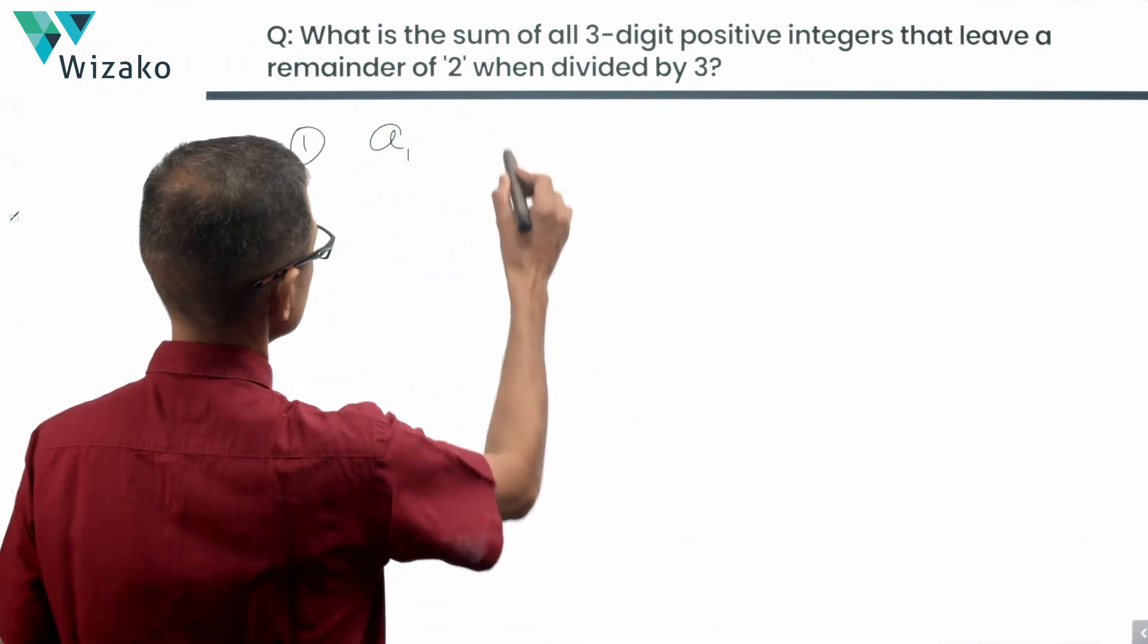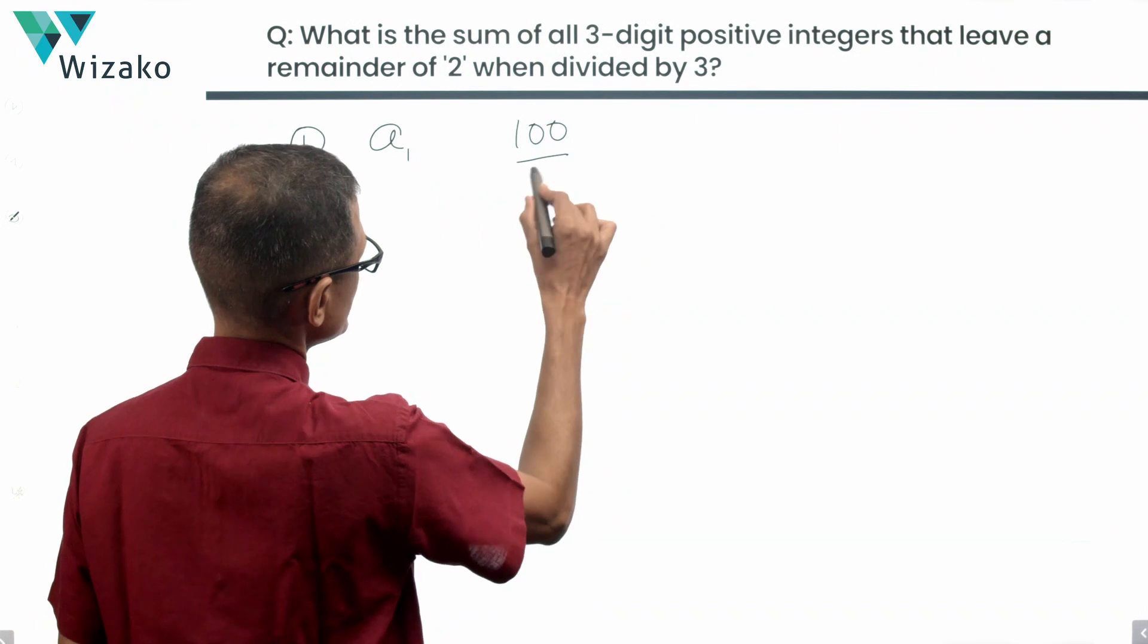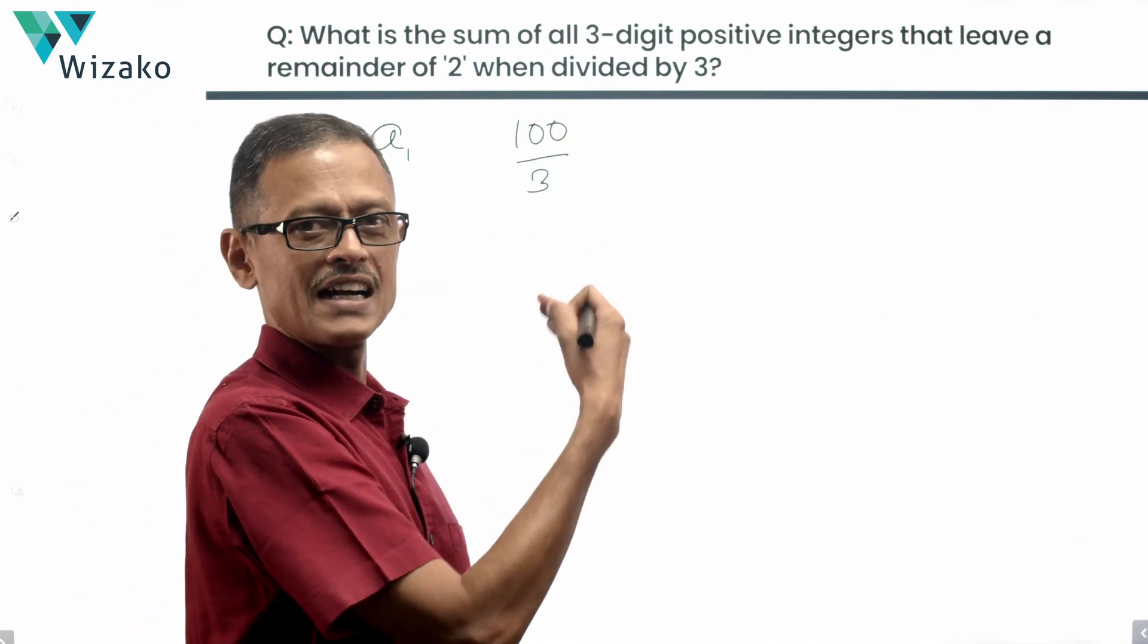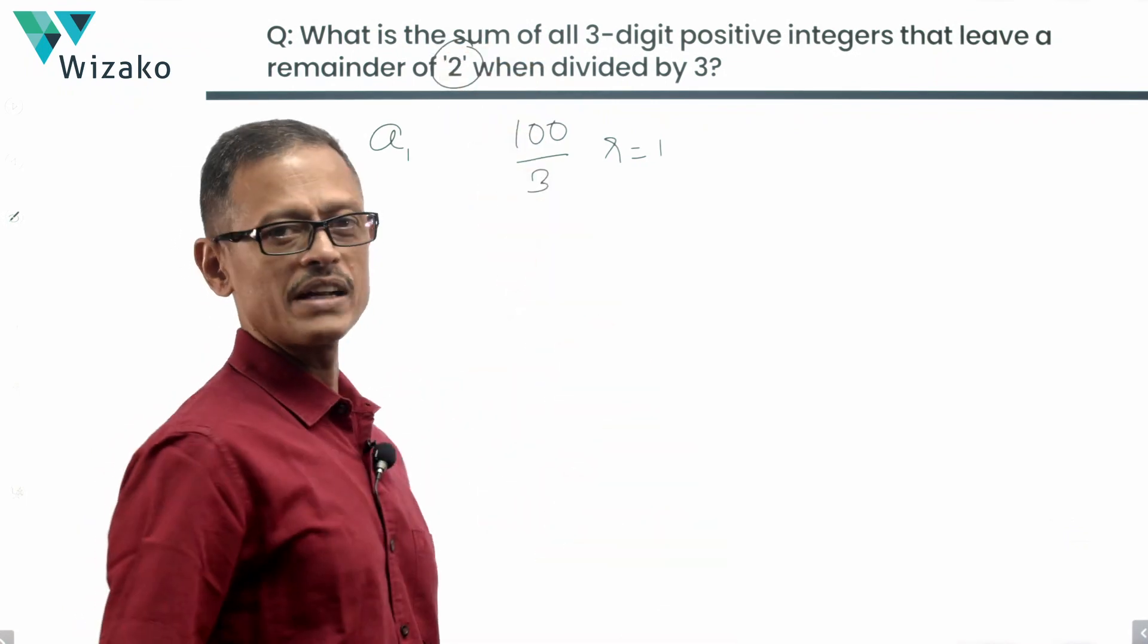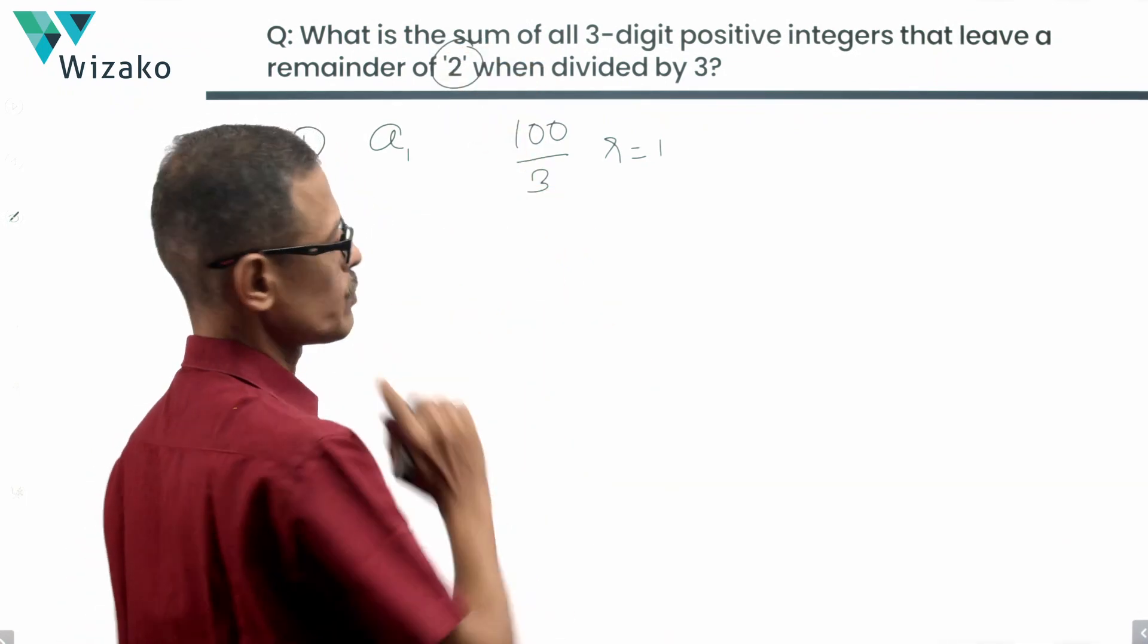The smallest three digit positive integer is 100. Let's divide 100 by 3. 99 is divisible by 3. 100 by 3, the remainder is equal to 1. What should our remainder be? Our remainder should be equal to 2. So this is not what we are looking at.